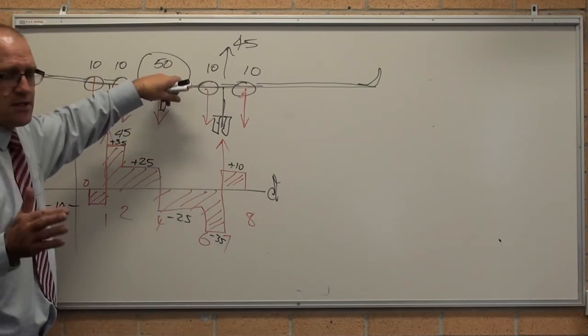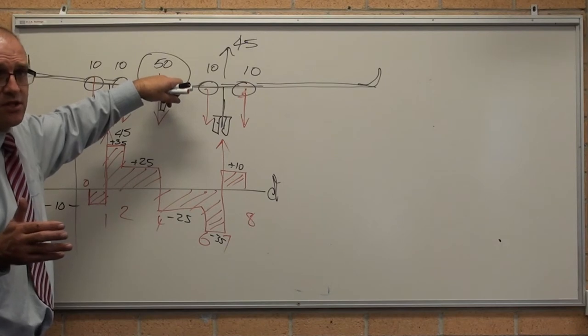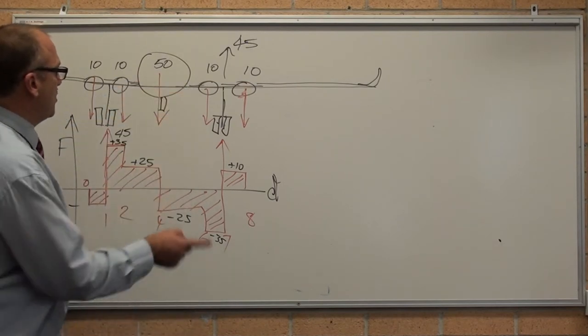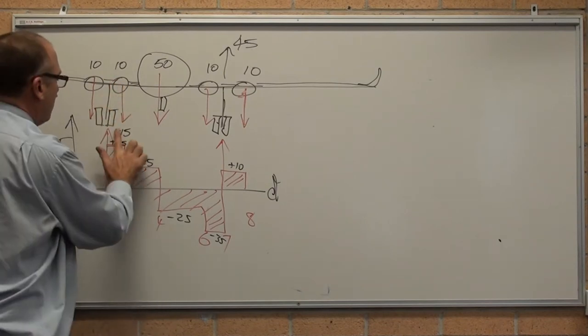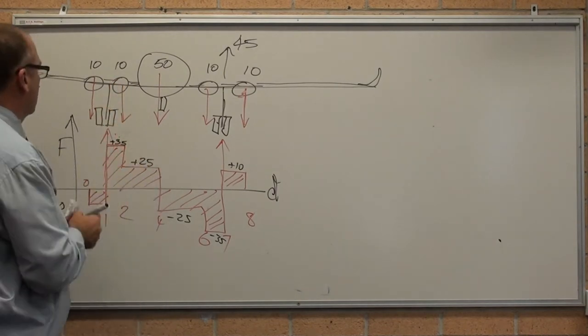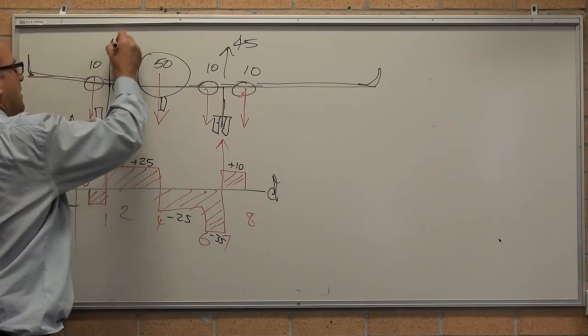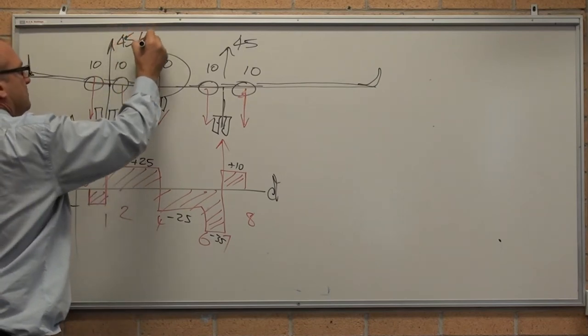They're not realistic numbers but I just picked anything for the sake of demonstration, which means the 90 going down—the force on each wheel pushing back up is 45. So that one there is 45 pushing back up as well.